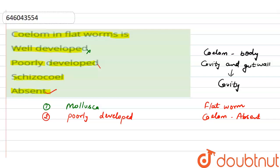Now the third one. Here, schizocoel is also wrong. So the right answer is option 4, that is absent. Thank you.